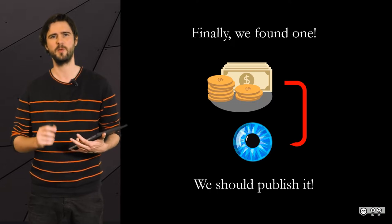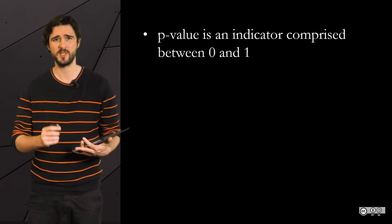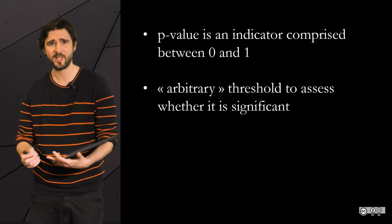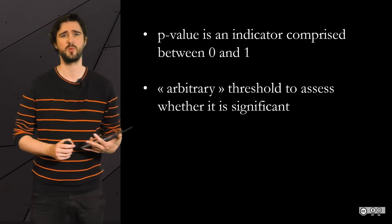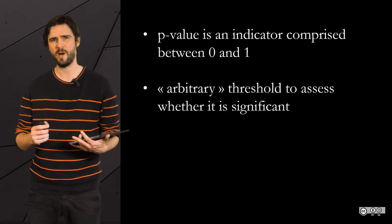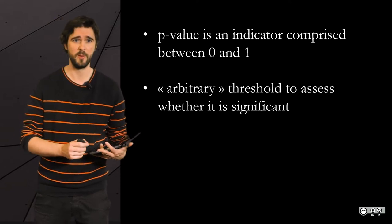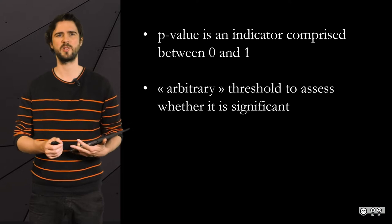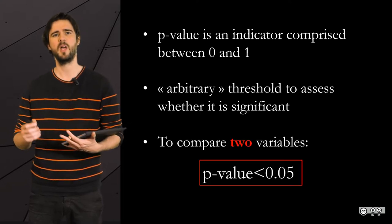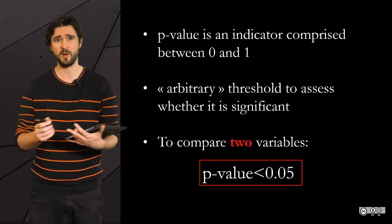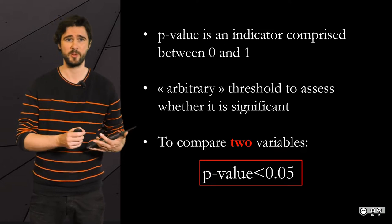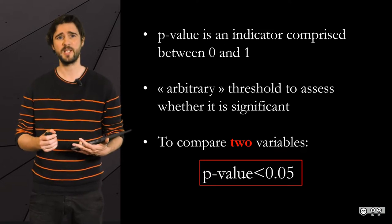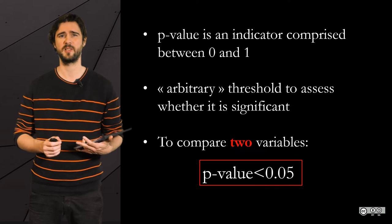Do you remember about p-value, the indicator that we use to assess whether there is a statistically significant relationship between two variables? As a reminder, the closer p-value is to 0, the stronger the relationship is. We usually take a threshold of 0.05. And when you compare the relationship between two variables, if the p-value is lower than 0.05, then we can say the relationship is statistically significant.